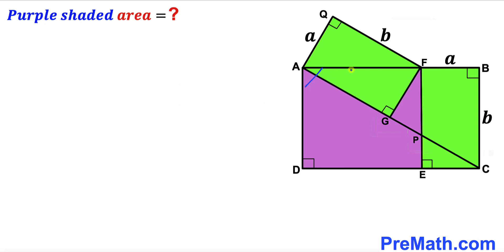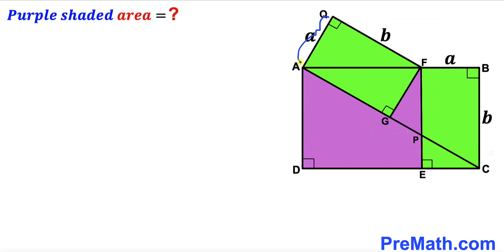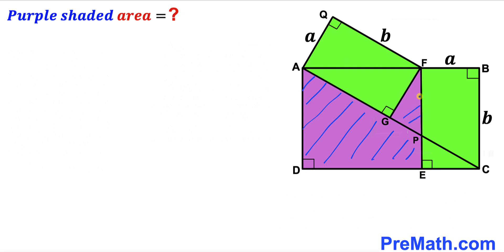Welcome to PreMath. In this video we have got this big rectangle ABCD along with these two identical green rectangles, as you can see in this given diagram, such that AC is the diagonal of this big rectangle ABCD. The side length of each green rectangle is lowercase a, while the other side length is lowercase b. Our task is to calculate the area of this purple shaded region — this area and this area combined.